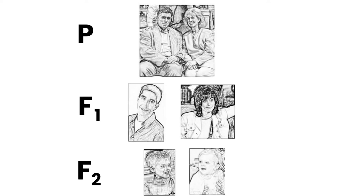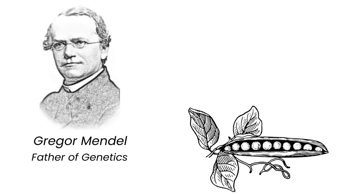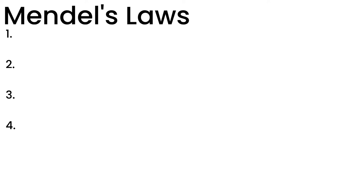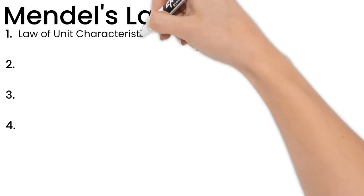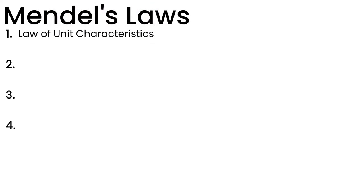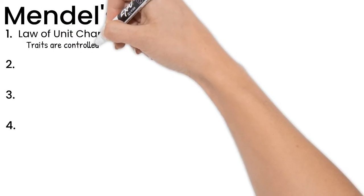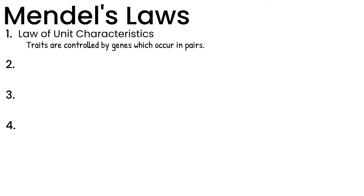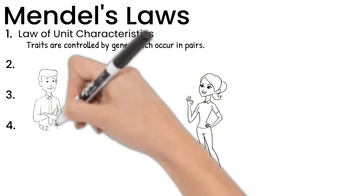Let's get back to Mendel. From his experiments with pea plants, he figured out the rules for genetics. There are four rules we call Mendel's laws. Number one is the law of unit characteristics, which states that traits are controlled by genes that occur in pairs — one from each parent. Remember meiosis? You get genes from your mom and your dad.